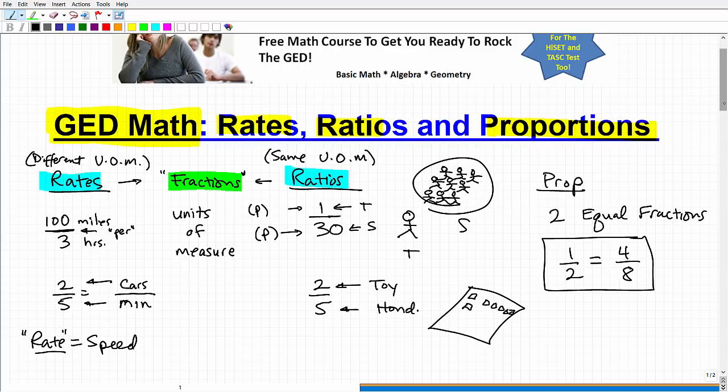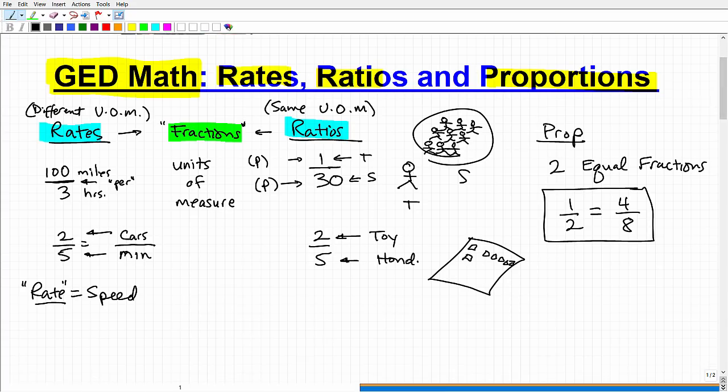Now, what's interesting about proportions is, let me just give myself some room here, is something called the cross product. Cross product. And the cross product is this. If I multiply crosswise, the result of doing a multiplication is called the product. So, if I multiply this way, I get the product. It's going to be equal to the product this way. You can see it's got kind of crisscrosses, right? So, one times eight is going to be equal to two times four. All right. So, if you have a valid proportion, the cross product is always equal. So, eight is equal to eight.